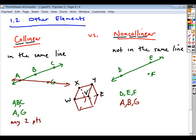So are points X, Y, and Z collinear or non-collinear? Do those three points fall in the same straight line? No, so they are non-collinear.